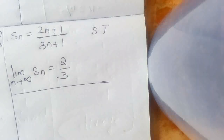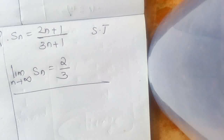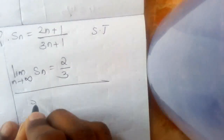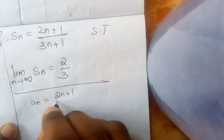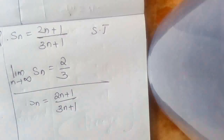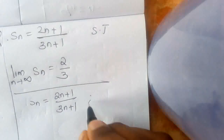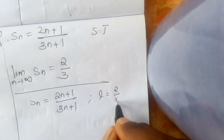Next problem: S_n is a sequence where S_n = (2n + 1)/(3n + 5). Show that limit as n → ∞ of S_n = 2/3. In this question, the sequence S_n = (2n+1)/(3n+5), and we need to show it converges to 2/3. So we take L = 2/3.